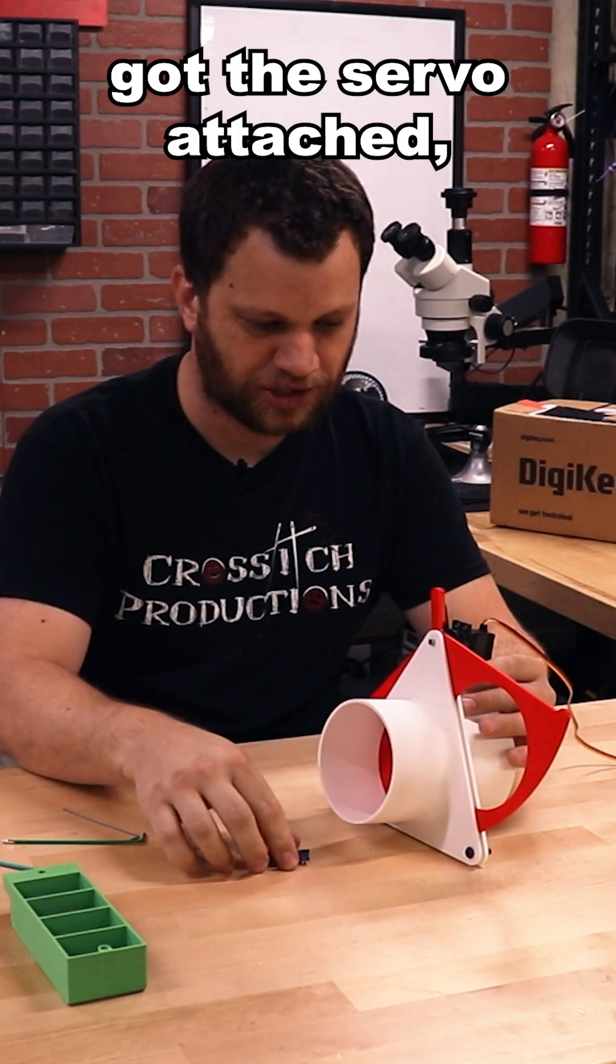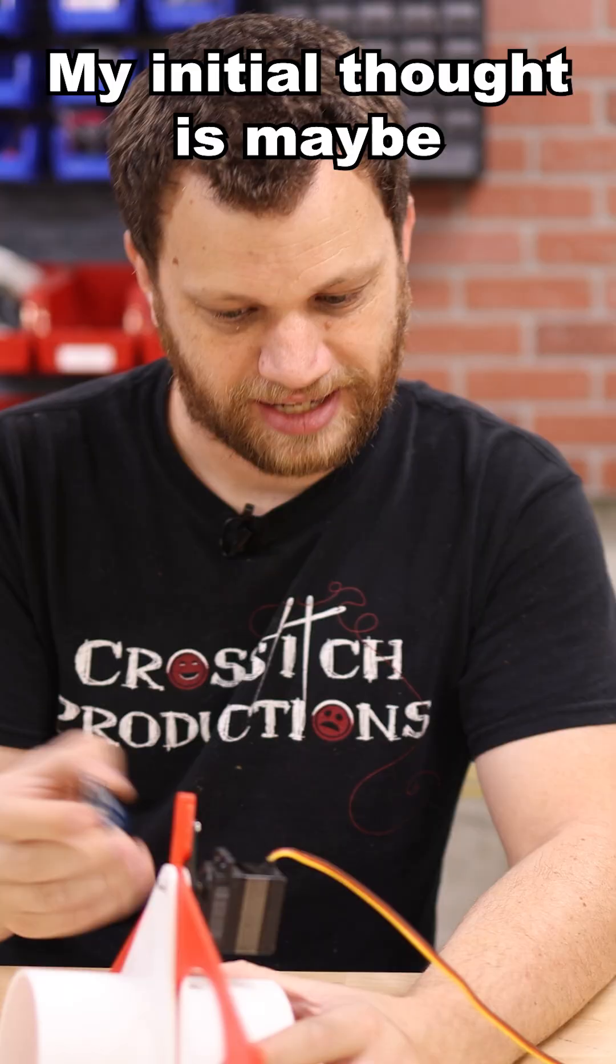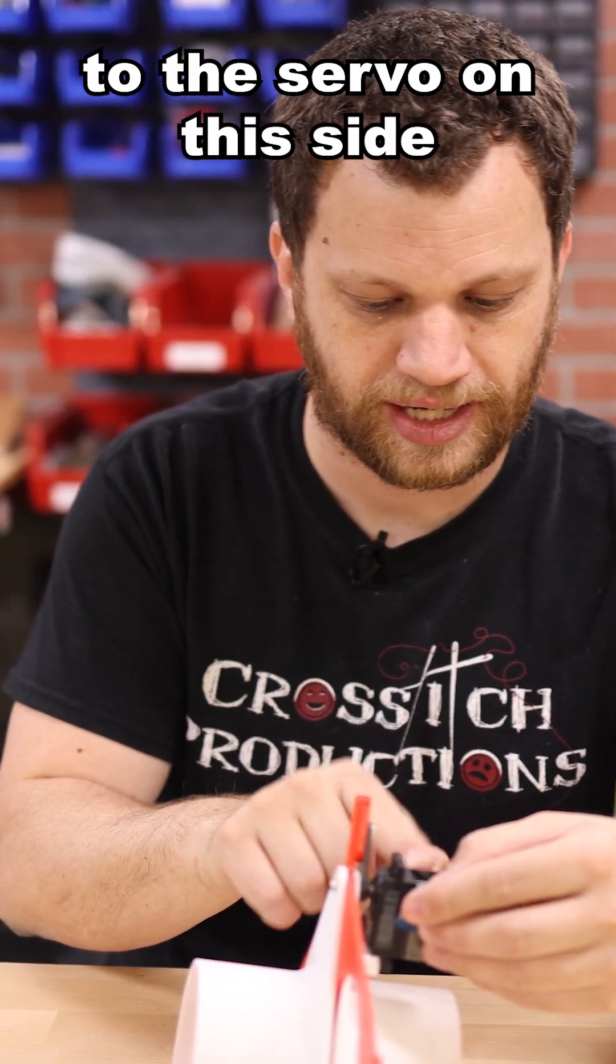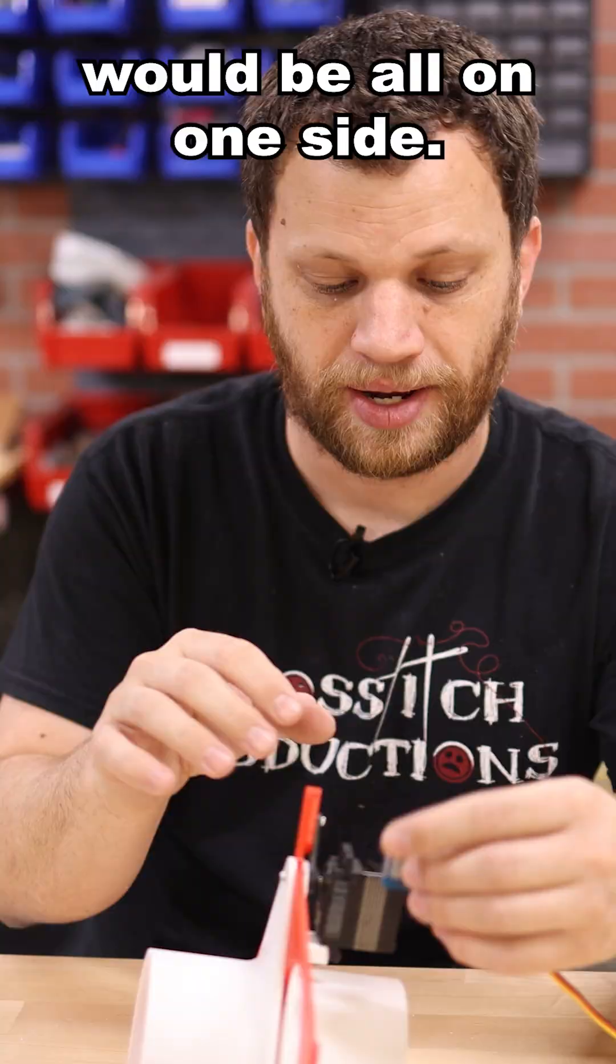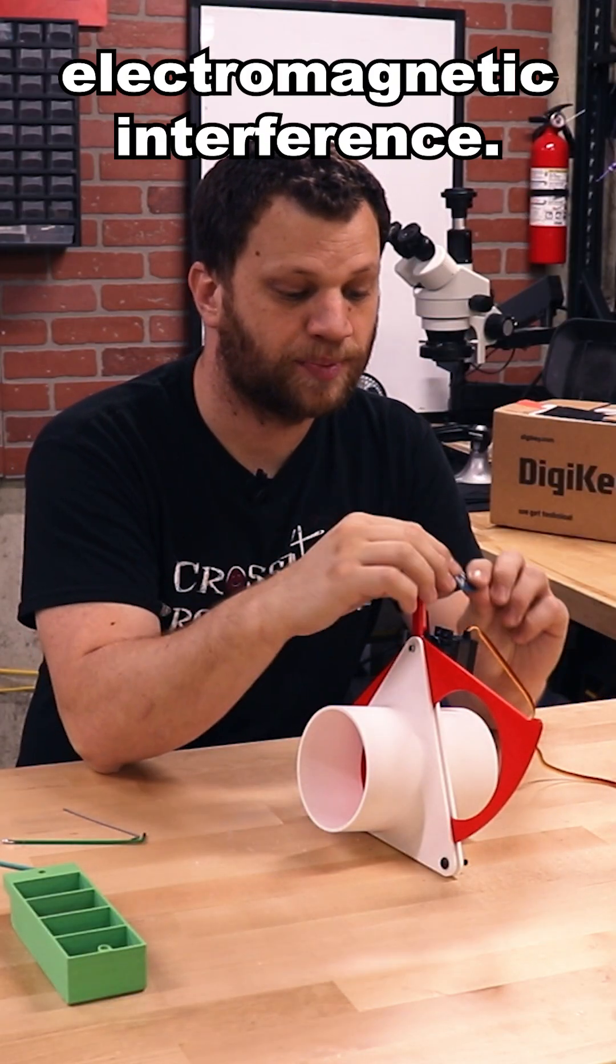We've got the servo attached, but as I'm looking at this we need a spot for the electronics. My initial thought is maybe I could attach them to the servo on this side and everything would be all on one side, but the problem with that is I'm a little bit concerned about electromagnetic interference.